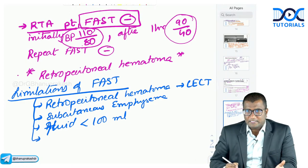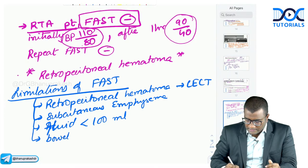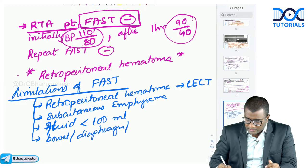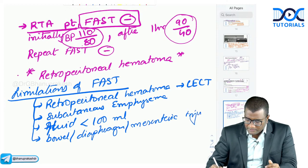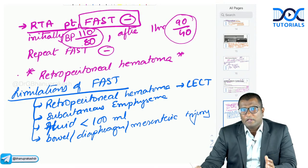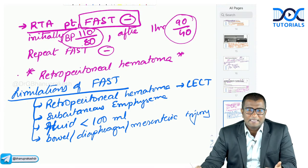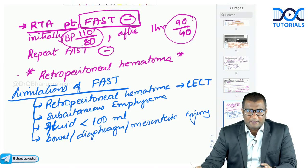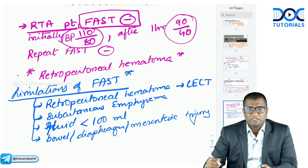Additional FAST limitations: bowel injuries, diaphragm injuries, and mesenteric injuries cannot be seen on FAST. So remember: retroperitoneal hematoma, subcutaneous emphysema, fluid less than 100 ml, bowel perforations, mesenteric tears, and diaphragm injuries — all are important limitations of FAST where it will not be useful.